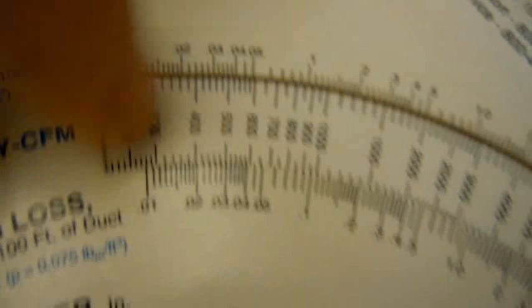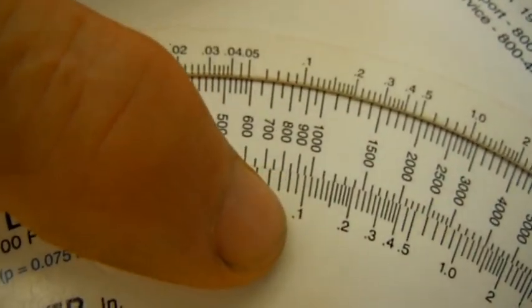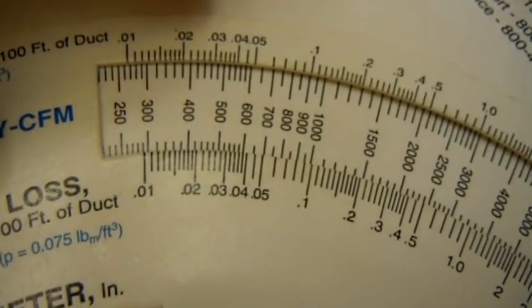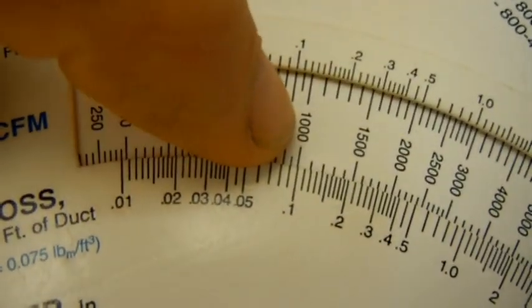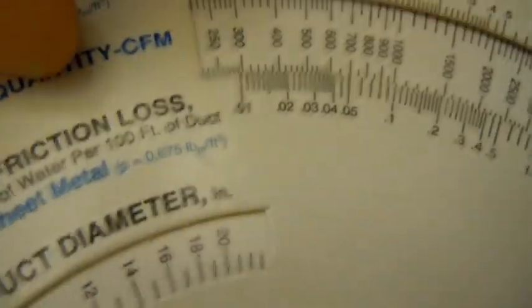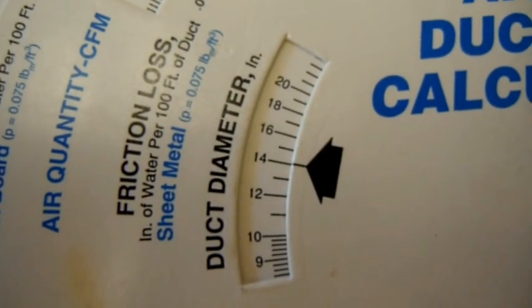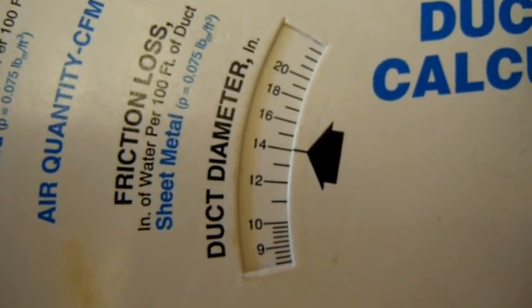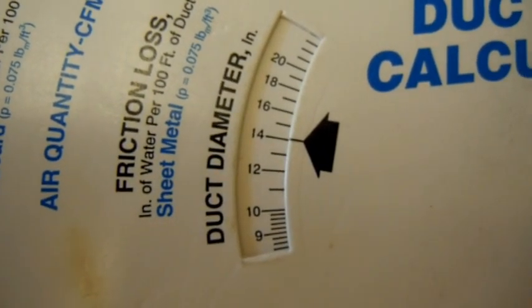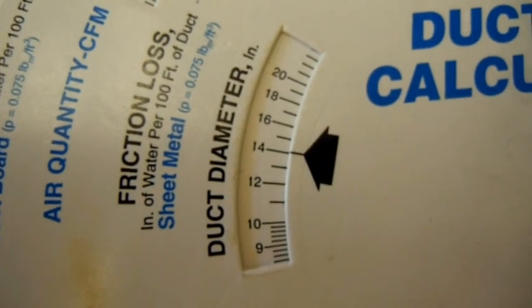So at .1, we'll line this up to a 2.5 ton air conditioning system. That would be 1,000 CFMs at .1. And that would line up the round duct diameter to be about 14 inches. And that would be what you would need off from the plenum.